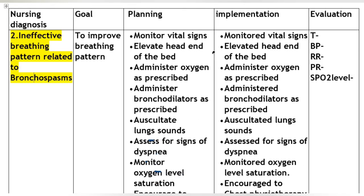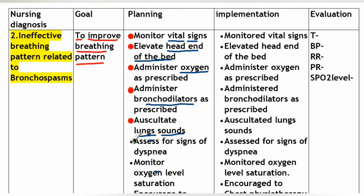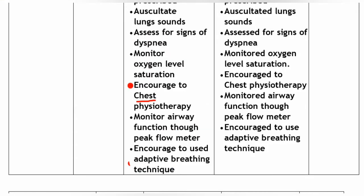Nursing diagnosis 2: Ineffective breathing pattern related to bronchospasm. Goal: To improve breathing pattern. Planning: Monitor vital signs. Elevate head of the bed. Administer oxygen as prescribed. Administer bronchodilators as prescribed. Auscultate lung sounds. Assess for signs of dyspnea. Monitor oxygen saturation level. Encourage use of chest physiotherapy. Monitor airway function using peak flow meter. Encourage use of adaptive breathing techniques.